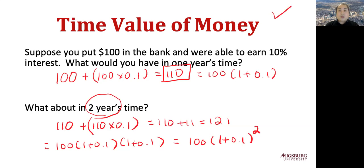You cannot compare cash flows directly if their timings are different. We need to convert to a common timing and compare. So if you want to compare $100 today and $100 a year later, we find a common time. With a 10% interest rate, $100 today becomes $110 a year later. $100 a year later is only $100 at that time, which means today's $100 is worth more than $100 a year later.